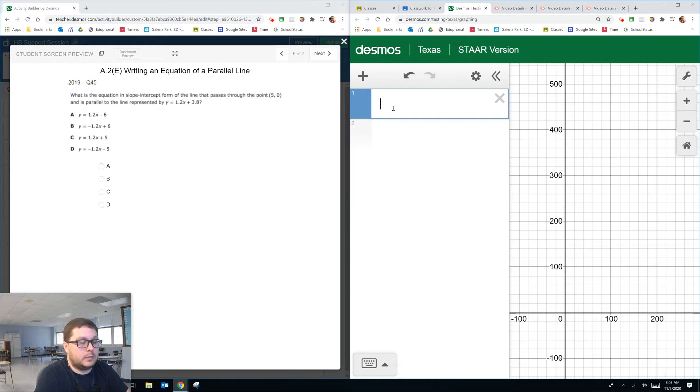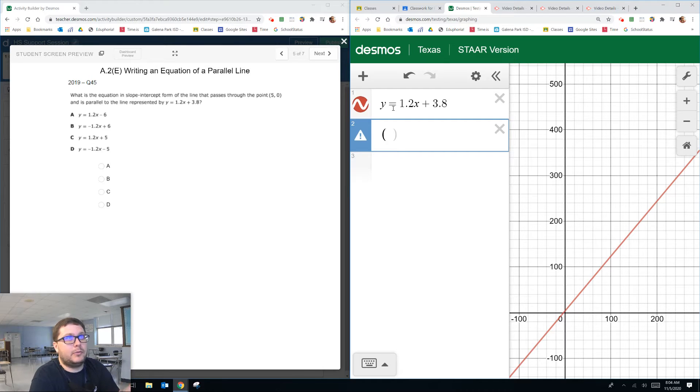All we have to do is literally put in that first equation, y equals 1.2x plus 3.8. And then I'm going to put in my point. I know I said it before, always put things into tables.